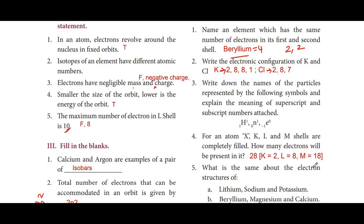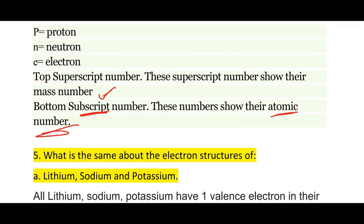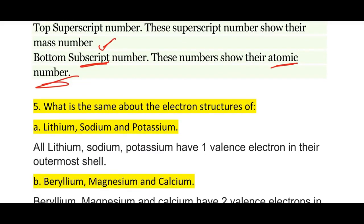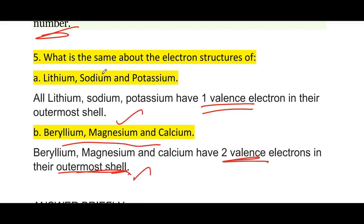Fifth: What is the same about the electron structures of lithium, sodium and potassium? All three have one valence electron in their outermost shell. For beryllium, magnesium and calcium, they all have two valence electrons in their outermost shell.